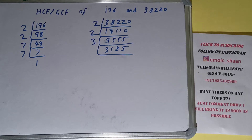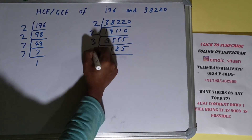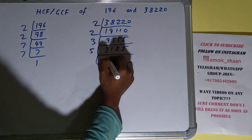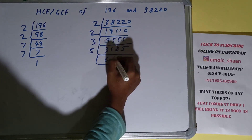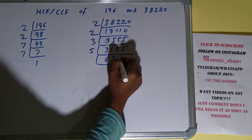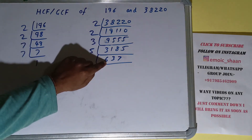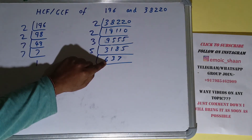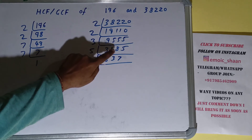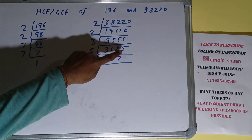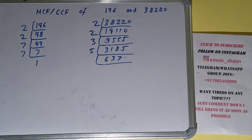3185 is divisible by 5 because the last digit is 5. So we'll divide, and we get 637. Now is 637 divisible by 5? No, so we'll check with the next lowest prime number, which is 7.